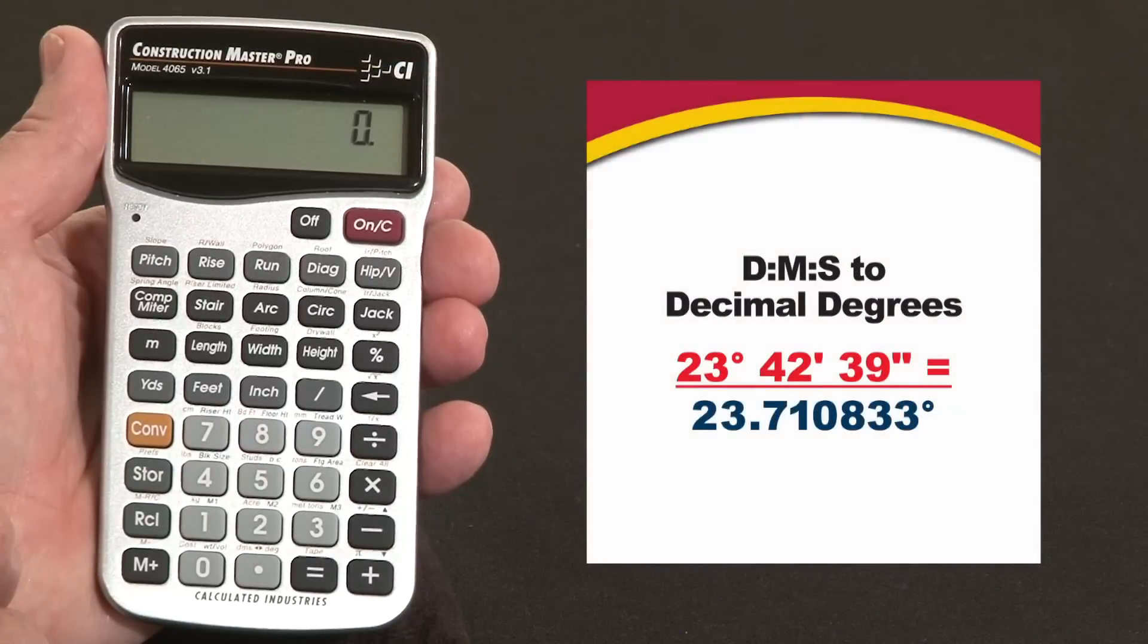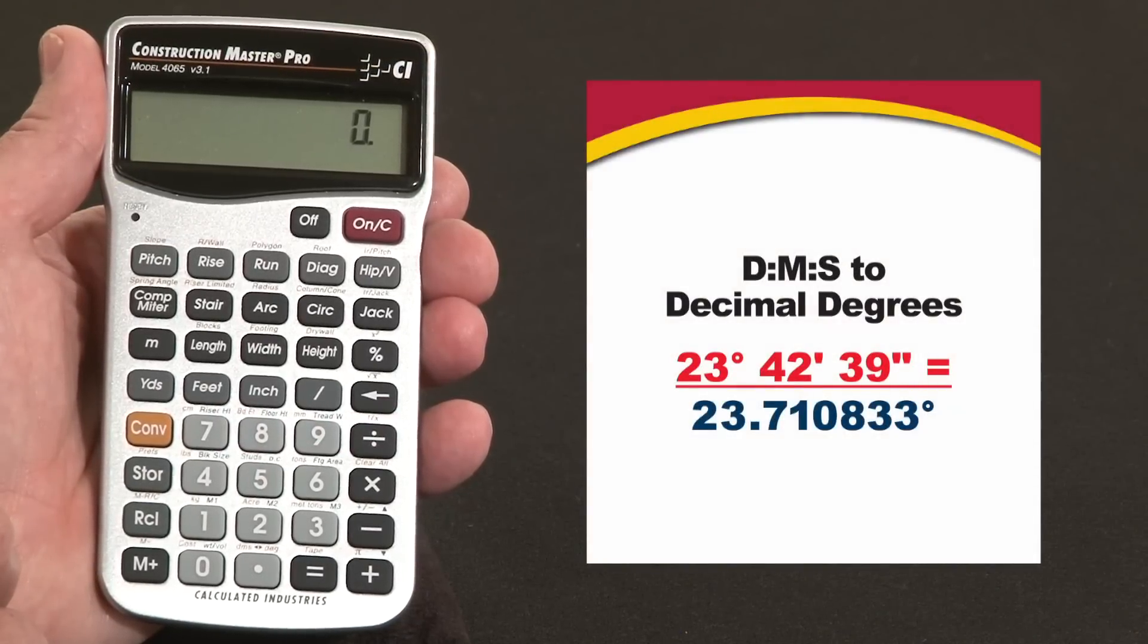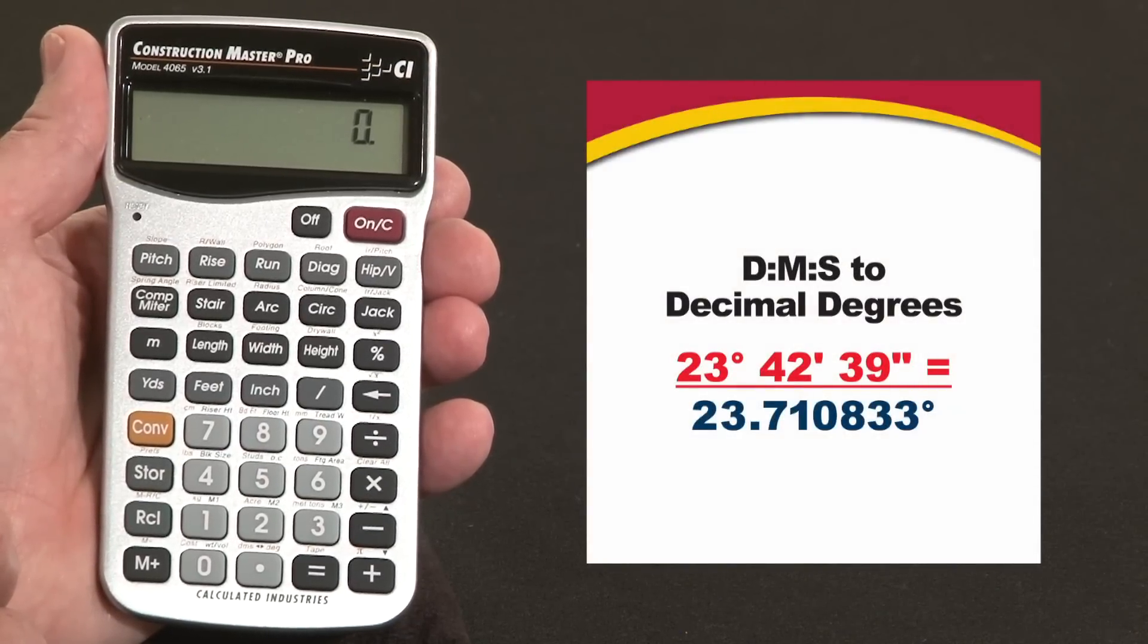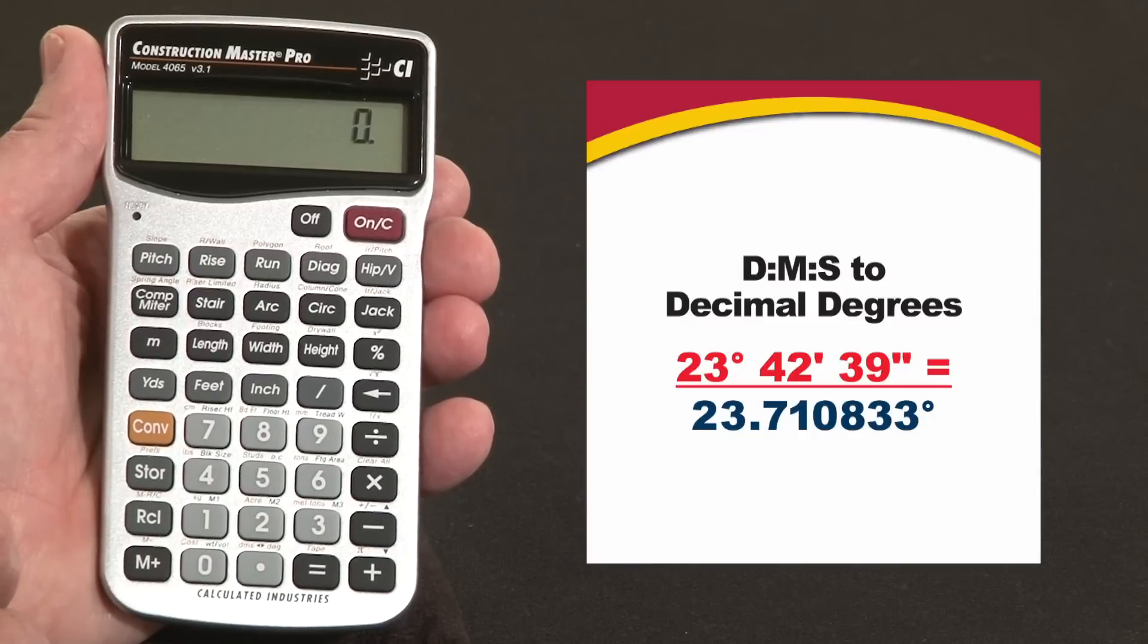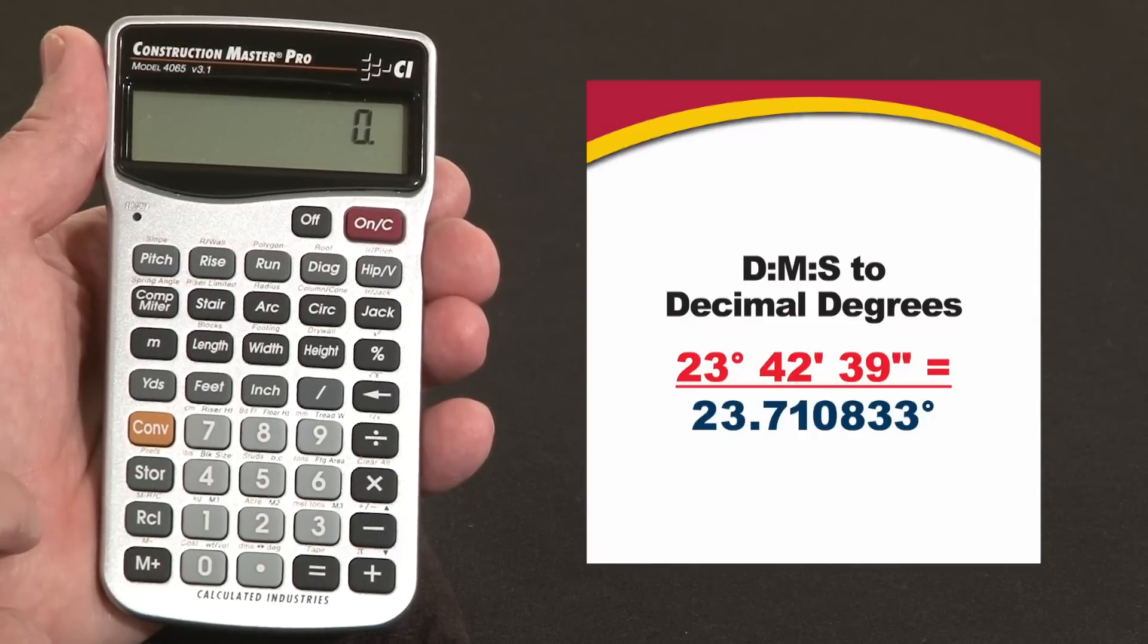Now let me show you how to convert degrees, minutes, and seconds to decimal degrees and back again. This is something you can do on the Construction Master Pro, the trig model, or the desktop model with the exact same keystrokes.